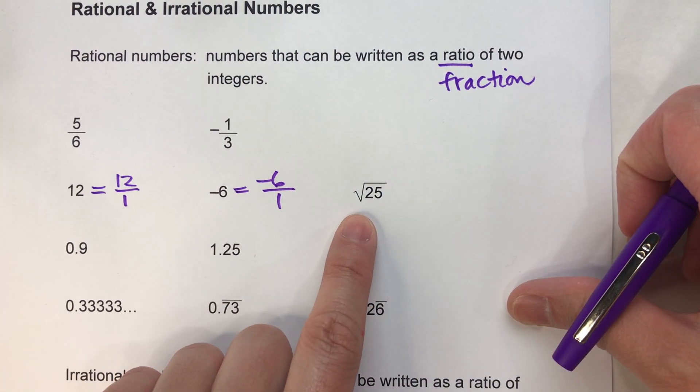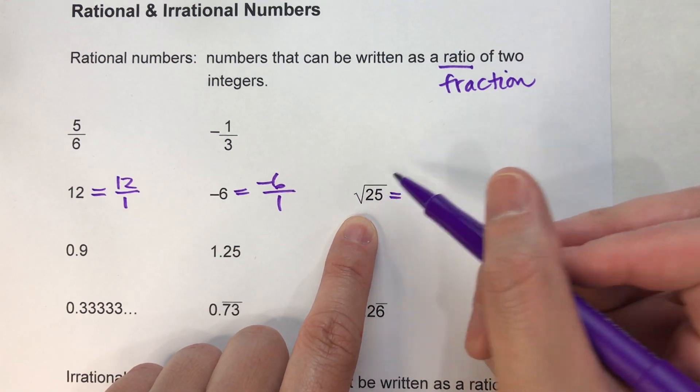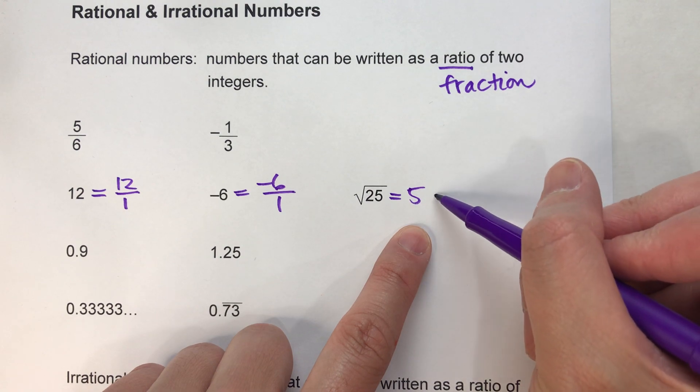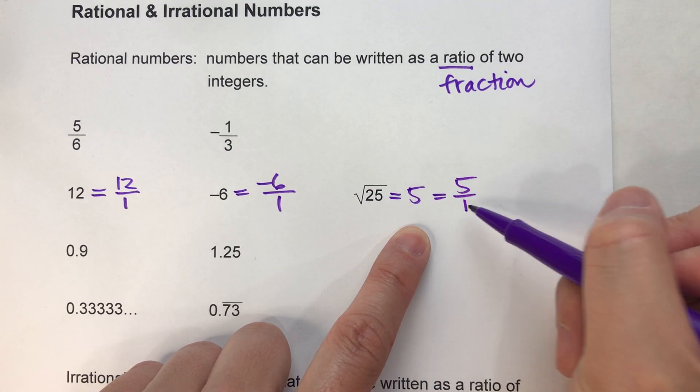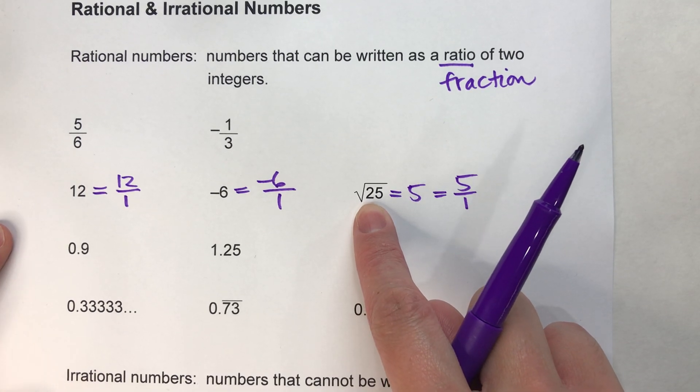Some square roots are rational if they equal whole numbers. For example, the square root of 25 is 5, and we know 5 can be written as a fraction, 5/1. Therefore, the square root of 25 is a rational number.